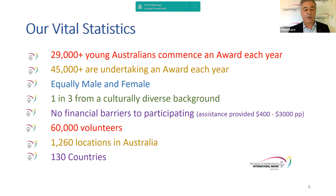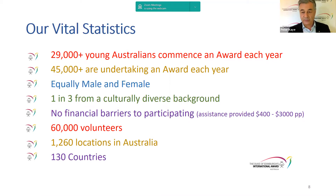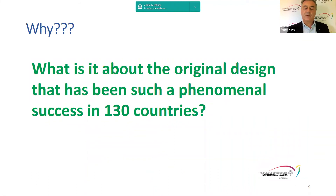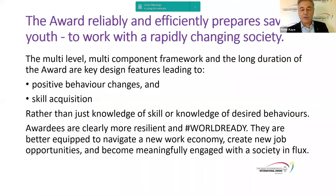In Australia we currently start around 30,000 young people a year, but our ambition is to reach 75,000 starters a year within the next four to five years, and then several hundred thousand a year beyond that. If this program is meant to be influential and available to everybody, we have to be able to reach those sorts of numbers.